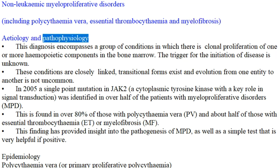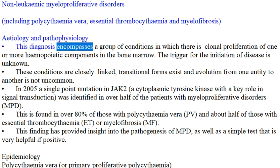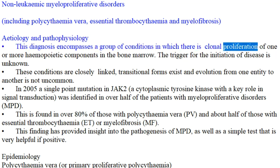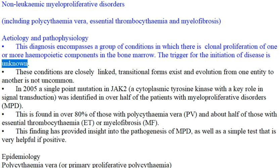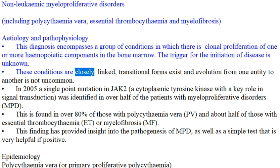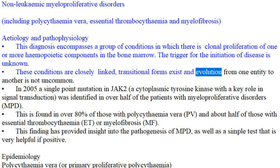Etiology and pathophysiology: This diagnosis encompasses a group of conditions in which there is clonal proliferation of one or more hemopoietic components in the bone marrow. The trigger for the initiation of disease is unknown. These conditions are closely linked; transitional forms exist, and evolution from one entity to another is not uncommon.